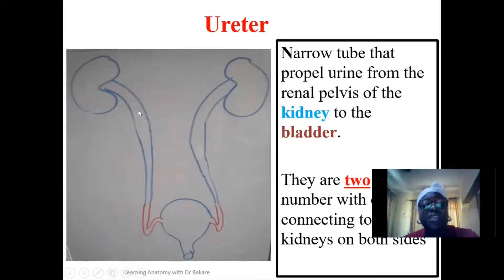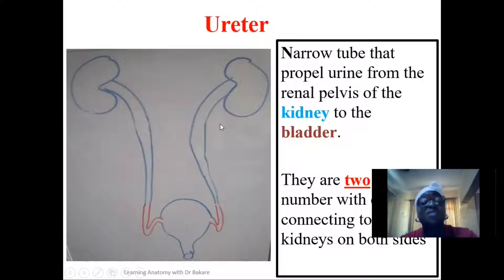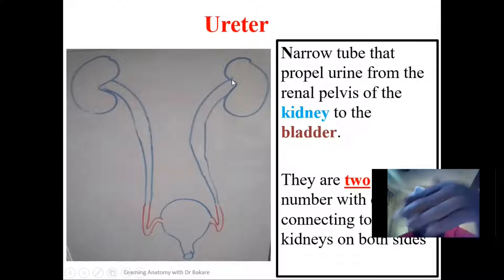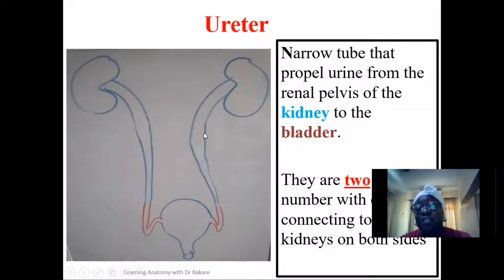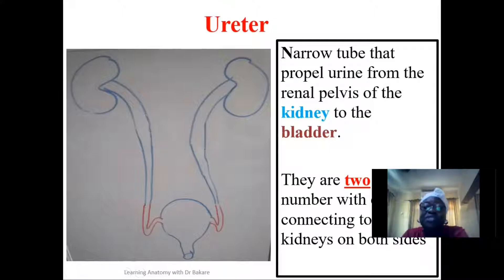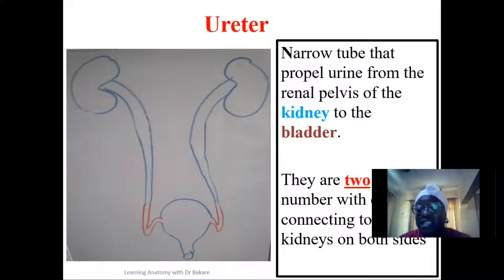Because we have two kidneys, each ureter is connected to one of the kidneys and propels the urine to be stored in the urinary bladder. There are also features that the ureter presents that help to prevent the backflow of urine into the kidney. We have a lot of features within the internal wall of the ureter that help to propel urine downward and prevent it from flowing back into the kidney. A separate lecture on the ureter is available for more detail.